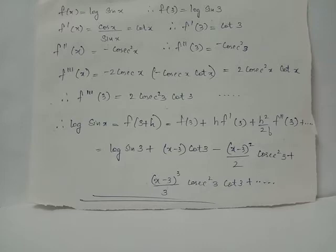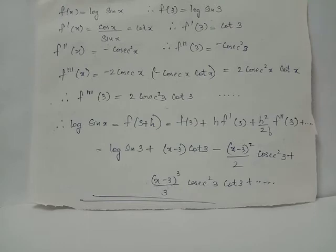The third derivative f'''(x) is the derivative of -cosec² x, which equals -2 cosec x · (-cosec x cot x) = 2 cosec² x cot x. Therefore f'''(3) = 2 cosec² 3 · cot 3.